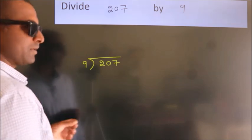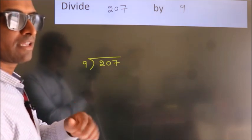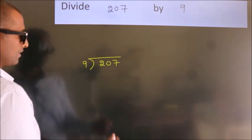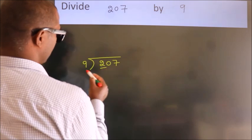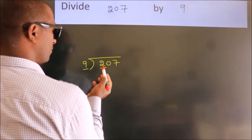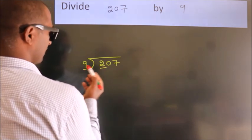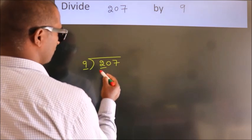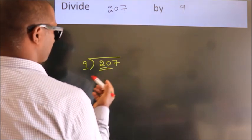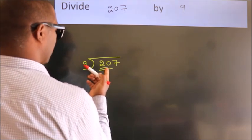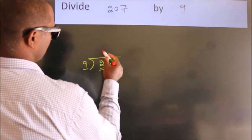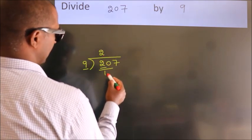This is your step 1. Next, here we have 2. Here 9. 2 is smaller than 9, so we should take 2 numbers. 20. A number close to 20 in the 9 table is 9 times 2 equals 18.